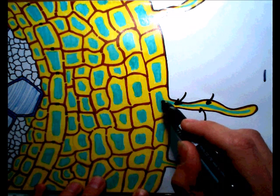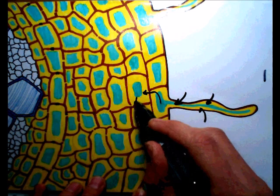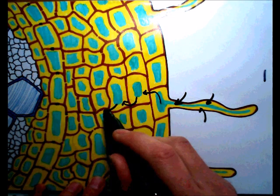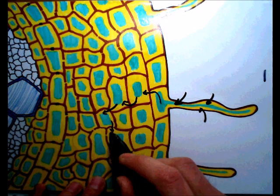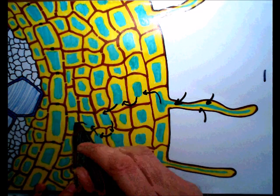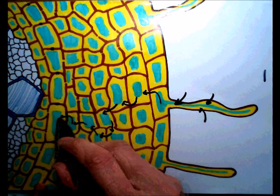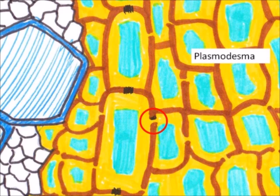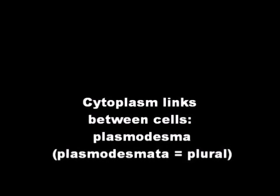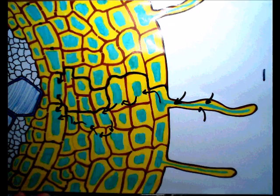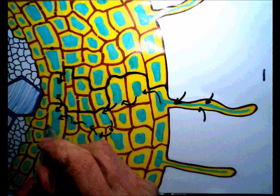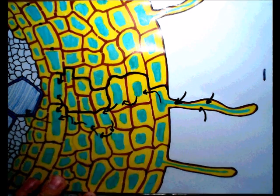Pathway 2 is the symplastic pathway. Sym means within or together, and plast means main form or main structure. So this is water travelling through the cytoplasm, the main part of each plant cell. Here we show water moving from cytoplasm to cytoplasm of neighbouring cells through tiny little linking structures called plasmodesmata. So there's a continuous pathway of cytoplasm from the epidermis to the endodermis. Here we see water arriving at the endodermis, which is where the water from the apoplastic pathway also ended up.